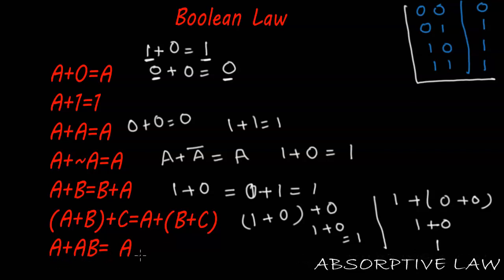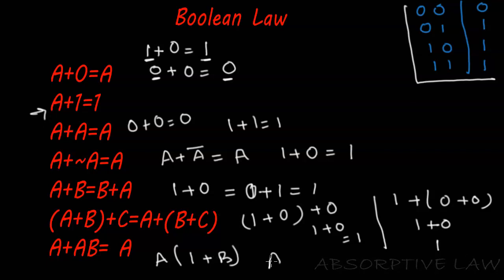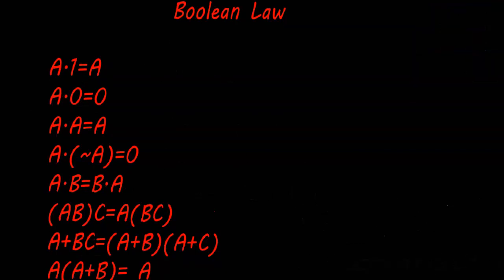The next law is: a plus ab equals a — this is called the Absorbing Law. Let's see how we get the answer. Taking a as common, we get a times (one plus b). Now one plus any number equals one, as seen in the Null Law. Hence we get a times one, and the answer is a.